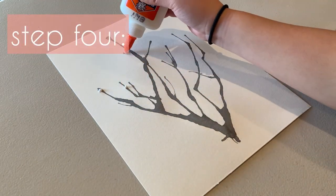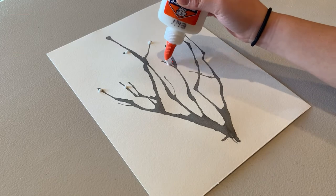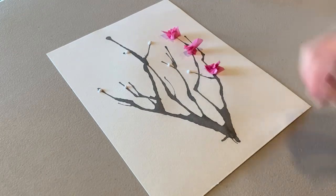After your tree is completely dry, put small drops of glue on the ends of the branches, then stick your tissue flowers on.